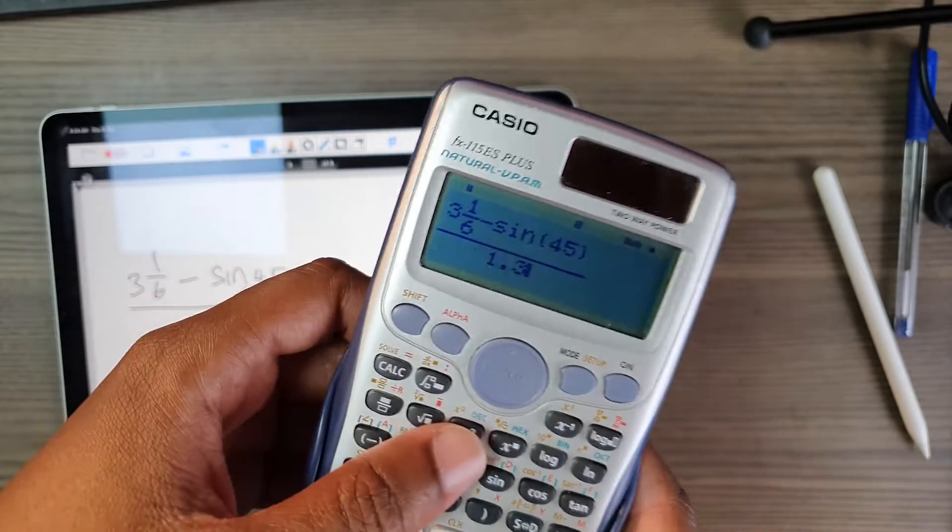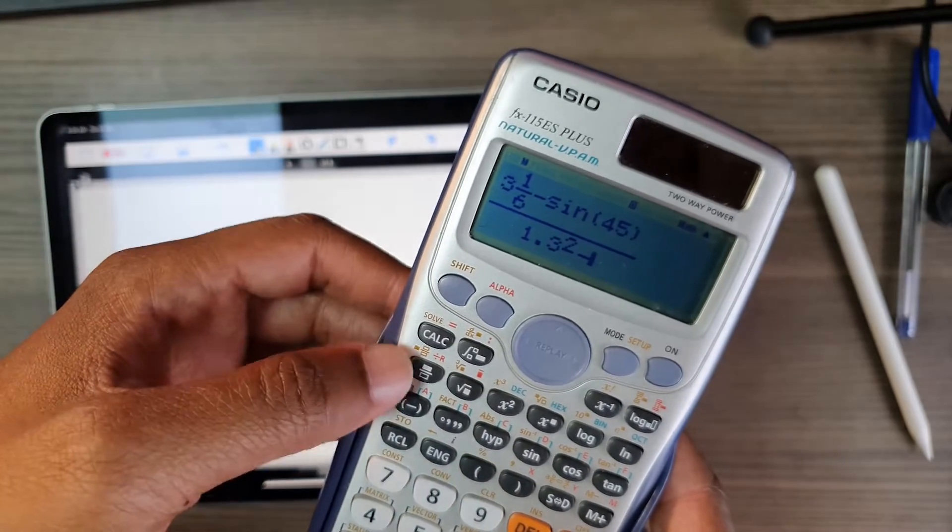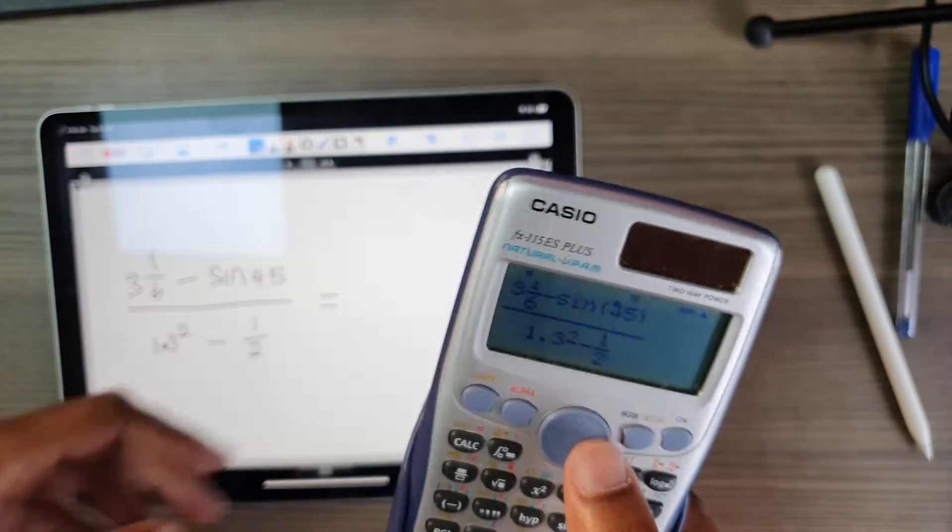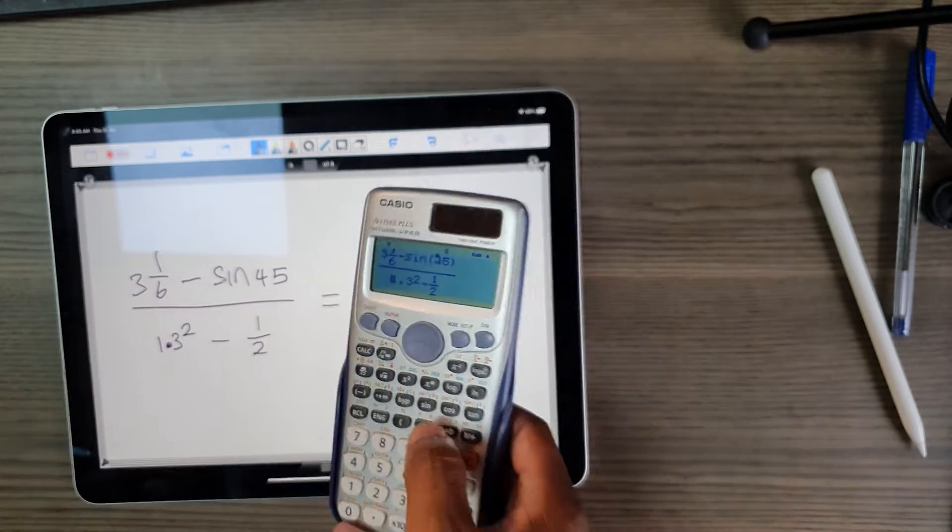1.3 squared. I'll just make use of this minus half, so I'll need another fraction there, one over two. It's in a very natural display—that's what makes this calculator so nifty.